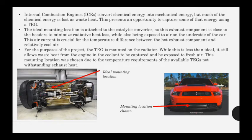Internal combustion engines, or ICE, convert chemical energy into mechanical energy, but much of the chemical energy is lost as waste heat. This presents an opportunity to capture some of that energy using a TEG. The ideal mounting location is attached to the catalytic converter, as this exhaust component is close to the headers to minimize radiative heat loss, while also being exposed to air on the underside of the car. This air current is crucial for the temperature difference between the hot exhaust component and the relatively cool air.